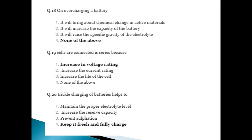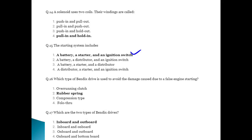Charging a battery brings about a chemical change in the active material, increases the capacity of the battery, and raises the specific gravity of the electrolyte. When cells are connected in series, voltage rating increases. Trickle charging of batteries helps to keep the battery fresh and fully charged. These are the important questions for this topic.